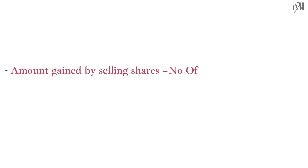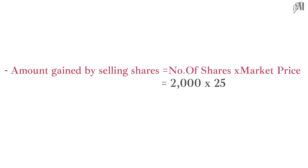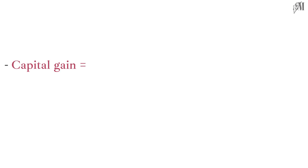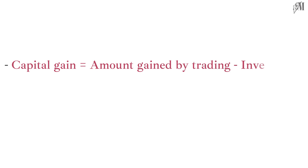To find the amount gained by selling the shares, multiply the number of shares by the market price: 2,000 × 25 = 50,000 rupees. It is very clear that this transaction gave a capital gain, which is found by subtracting the investment from the amount gained by trading.